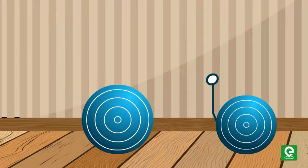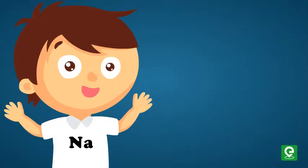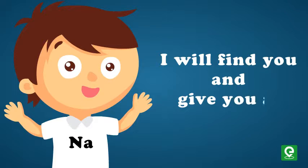As the atomic size of elements increases, it becomes extremely easy to remove electron from its valence shell. This ability is known as electropositivity. No matter who you are, Group 1 elements will find you and give you an electron.